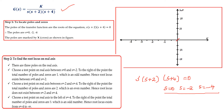Mark s = 0 with a cross, s = -2 with a cross, and s = -4 with a cross. Next, we are going to find the root locus on the real axis. There are 3 poles on the real axis. There are no open loop zeros.